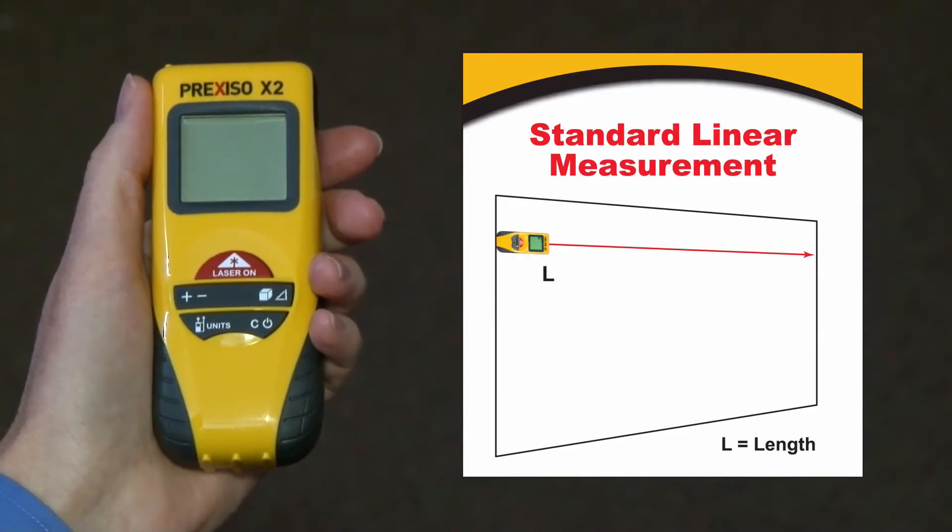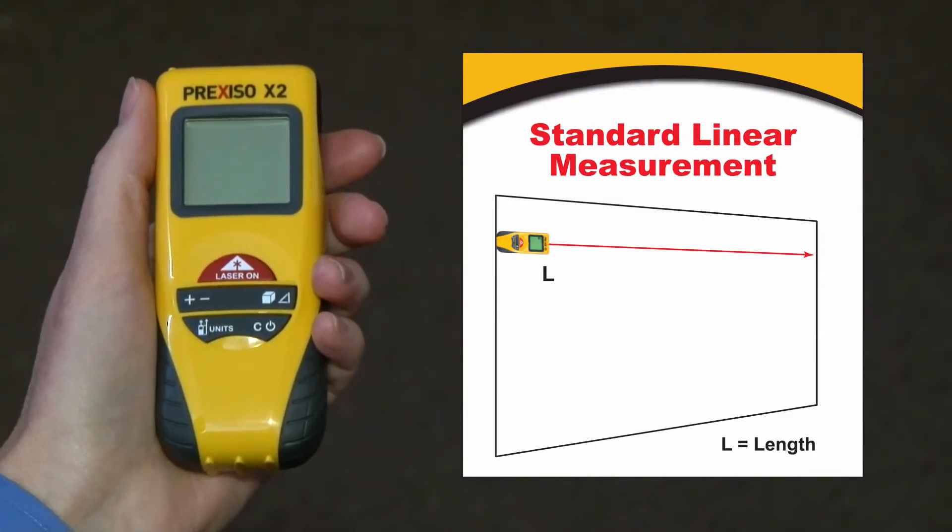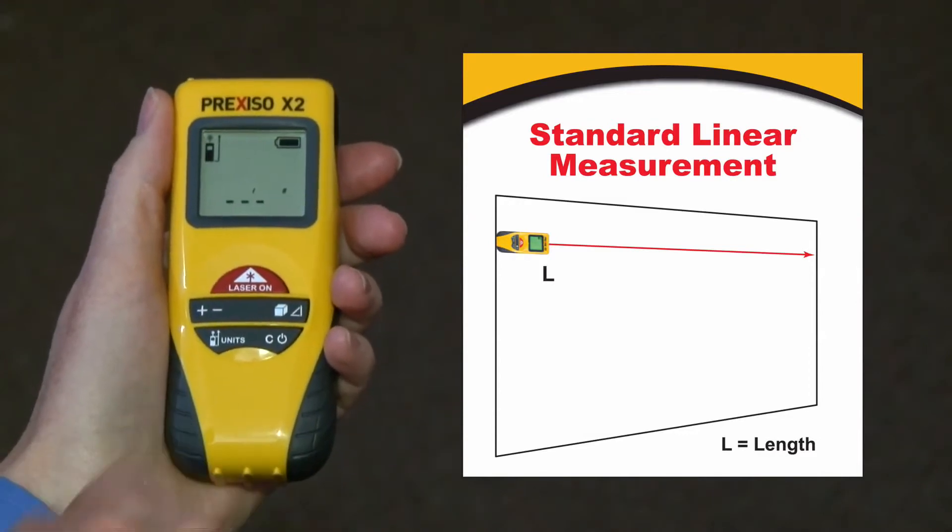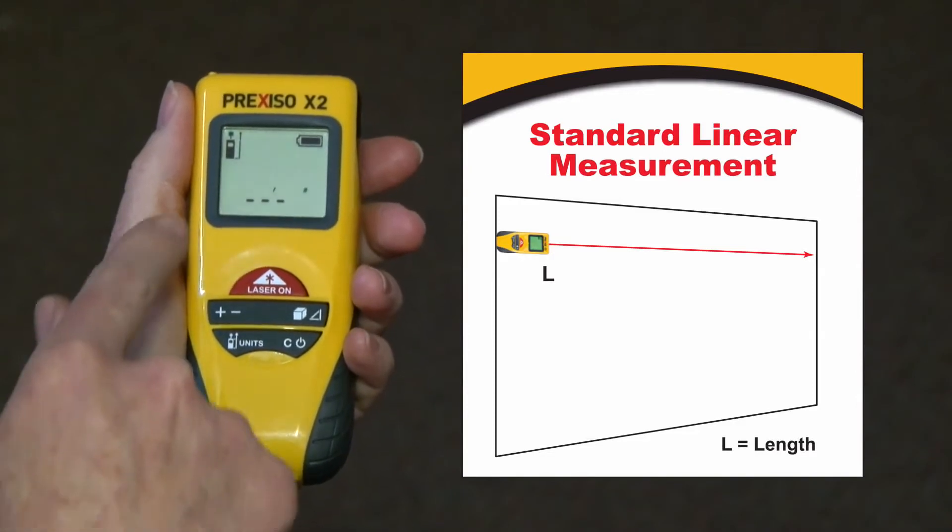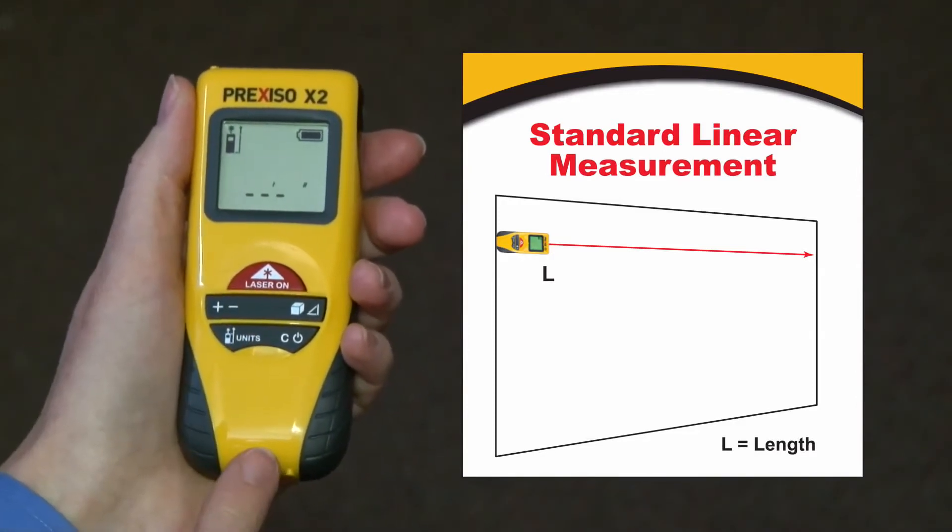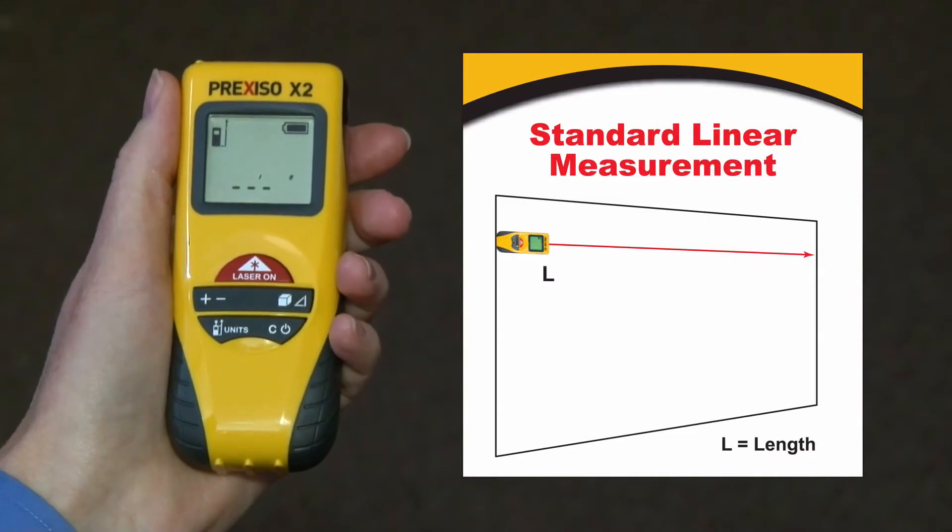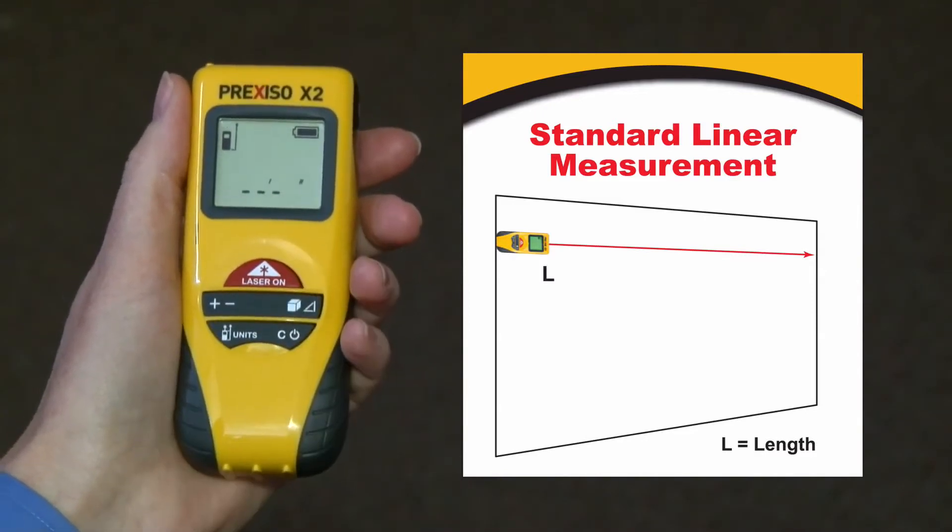I turn the unit on by pressing the large red laser on button. I'm going to set the device to measure from the back of the unit here. I'm going to measure today in feet inch fractions so it's all ready to go.